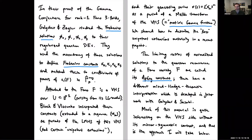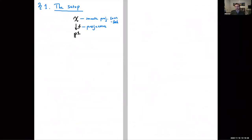Attached to the Fano is a variation of Hodge structure over a Zariski open in P^1 arising from its Landau-Ginzburg model. Block and Vlasenko then interpreted these constants as periods of the limiting mixed Hodge structure of that variation at the origin, and also interpreted their extension to an infinite sequence as limiting mixed Hodge structure of certain mixed period maps arising from unipotent extensions.